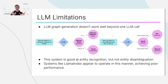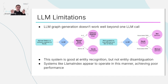So LLMs today — or even a system that calls an LLM multiple times — are really good at entity recognition, which is recognizing that there are multiple entities in a sentence, but very bad at entity disambiguation, which is figuring out whether a given entity is the same as one that was previously generated. Almost all systems I've seen appear to operate in this manner, and they achieve pretty low performance because their generated graphs have all of these problems.